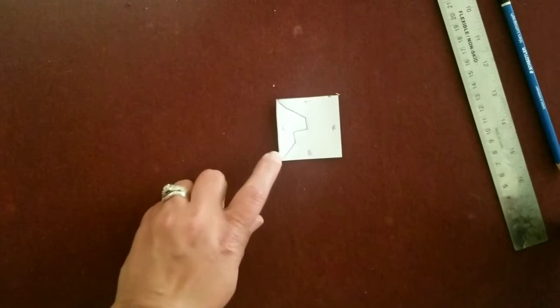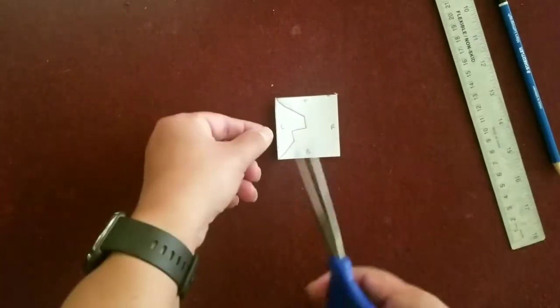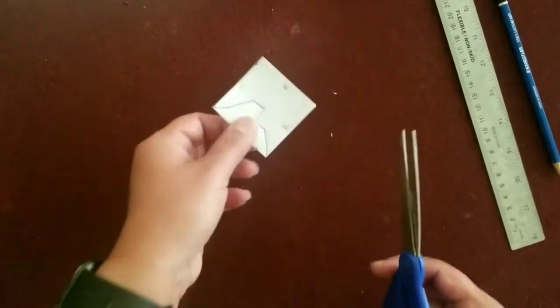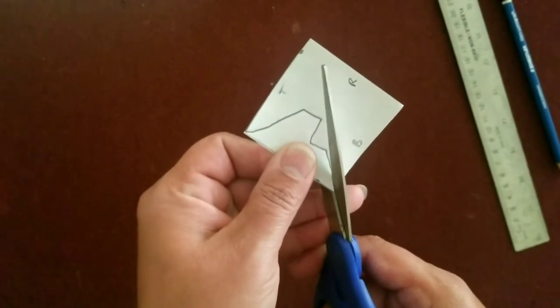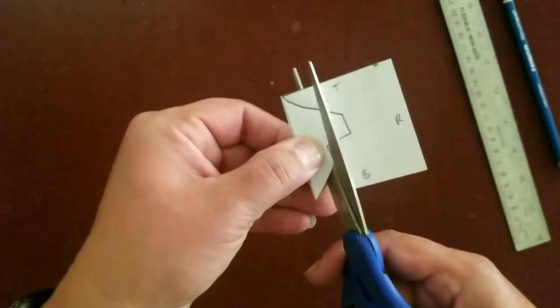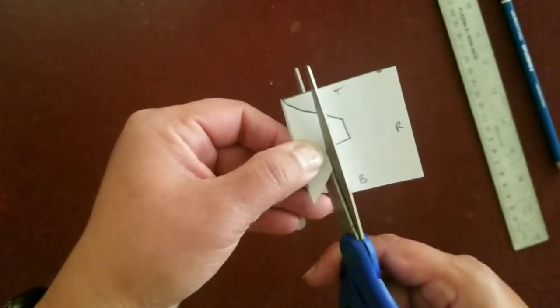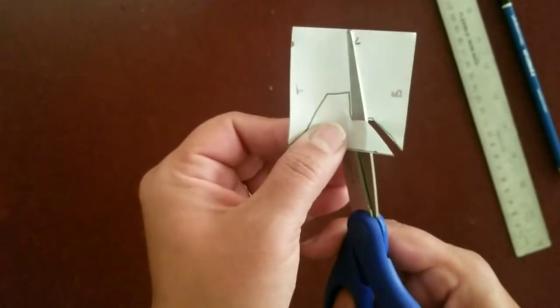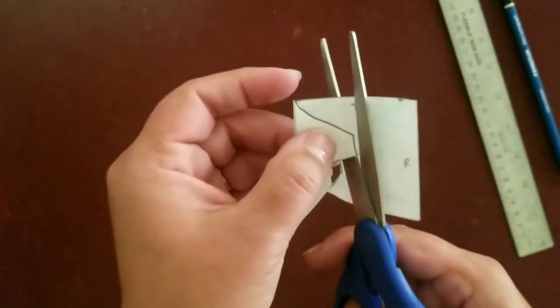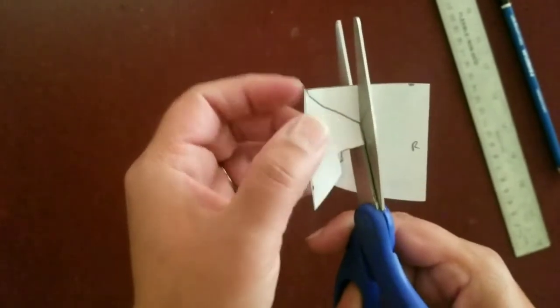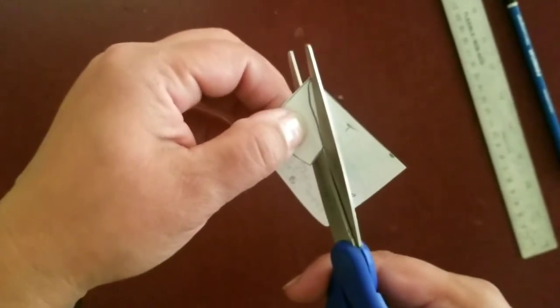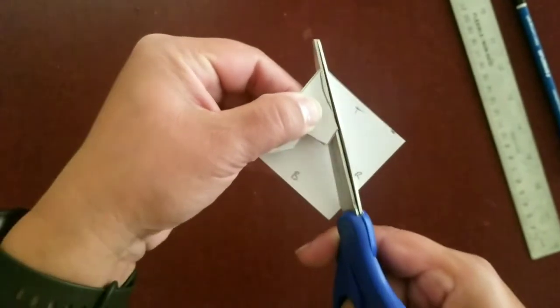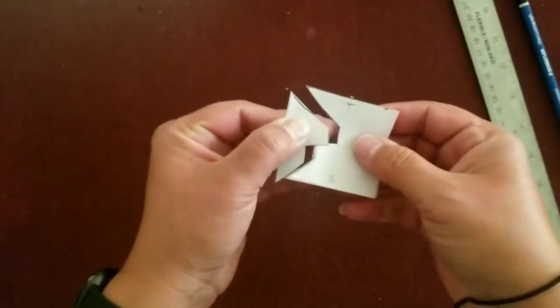So now that we have our line, we're going to go ahead and cut our line off. Do it as carefully as you can. Follow that line as best as you can. Try not to make any extra cuts, like if you cut too far. If you do, you're going to have to tape it back together.